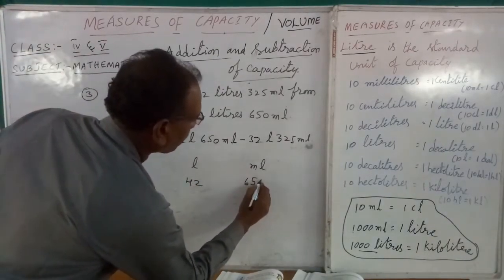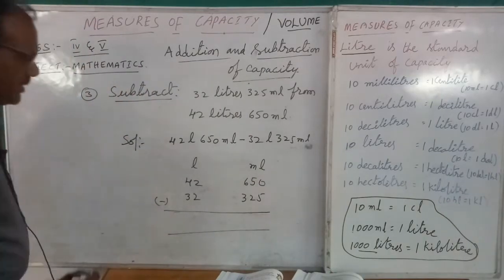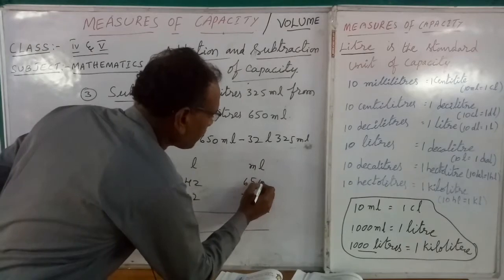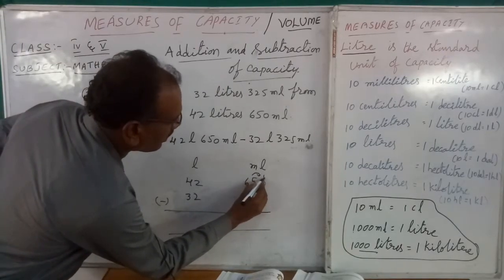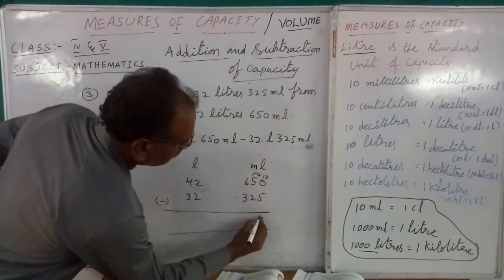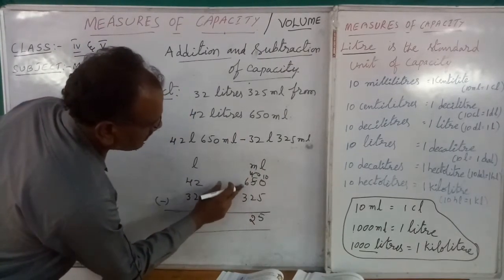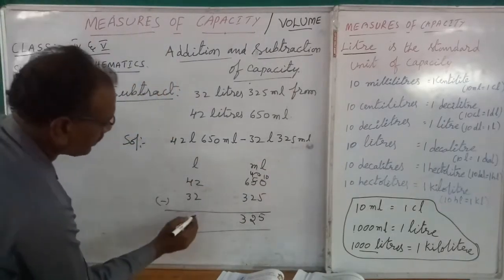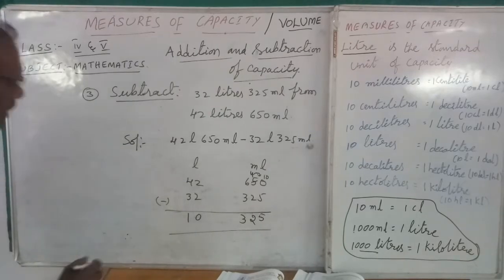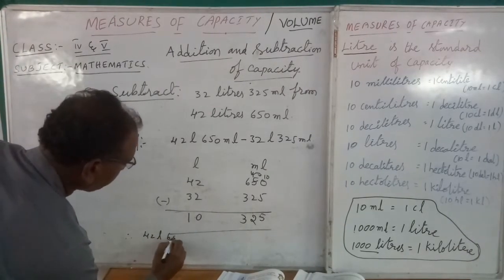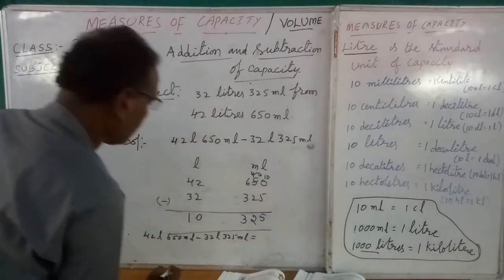We write liters and milliliters in columns: 42 liters 650 ml minus 32 liters 325 ml. Subtracting: 0 minus 5 — not possible, so we borrow. 10 minus 5 is 5, remaining is 4. 4 minus 2 is 2, 6 minus 3 is 3, 2 minus 2 is 0, 4 minus 3 is 1. Therefore 42 liters 650 ml minus 32 liters 325 ml equals 10 liters 325 ml.